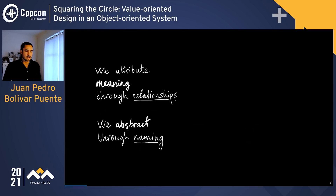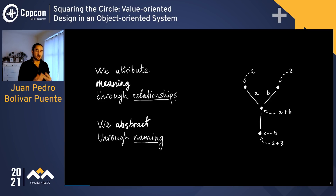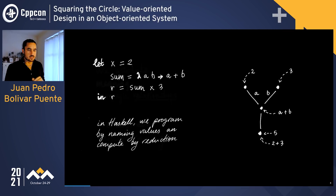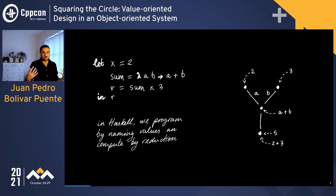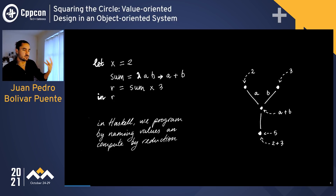When we talk about value semantics, we attribute meaning to values — which in themselves mean nothing in isolation. But when we start adding relationships between values and naming them, that's when we get meaning. Languages like Haskell are purely value-oriented: the only thing you can name is a value, relationships form a graph of points and arrows, abstractions are named relationships, and computing is just reducing a tree of values by establishing equivalences in that graph.